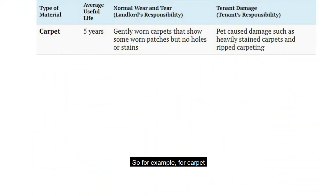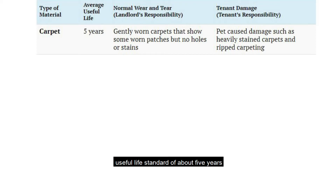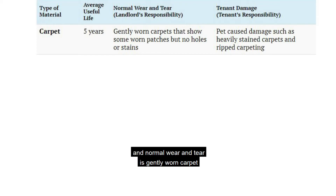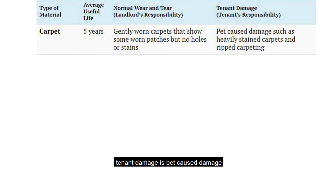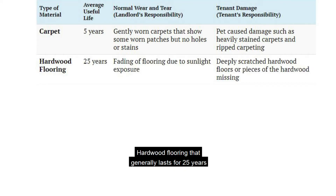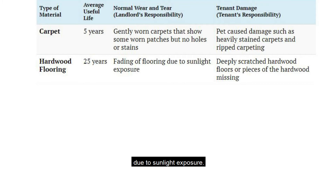For example, for carpet, we're seeing that carpet usually has an average useful lifespan of about five years. Normal wear and tear is gently worn carpet that shows some worn patches, but no holes or stains. Tenant damage is pet-caused damage such as heavily stained carpets and ripped carpeting. Hardwood flooring generally lasts for 25 years, and normal wear and tear is fading of the flooring due to sunlight exposure. Tenant damage is deeply scratched hardwood floors or pieces of hardwood floors missing.